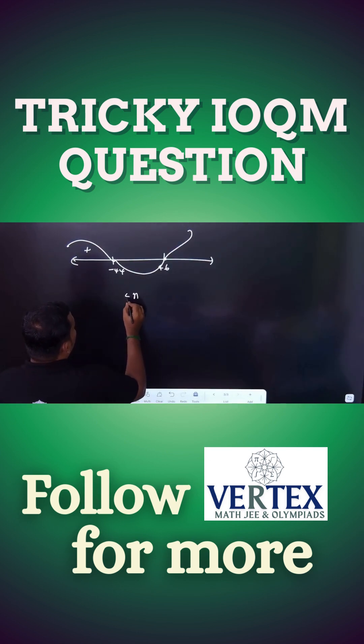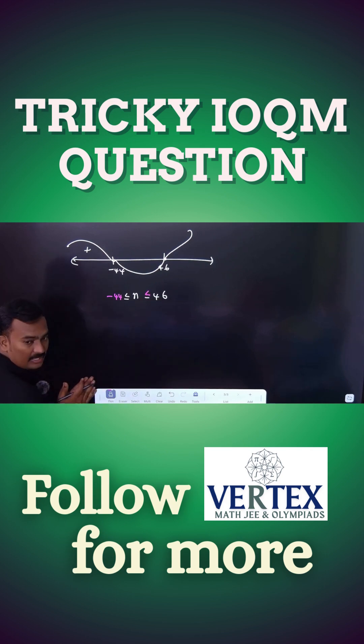Therefore, n will fall in minus 44 to plus 46. But we need n is positive integer, n belongs to positive integer. Therefore, n you can choose from 1 to 46. What is the maximum value? Maximum value of n would be 46.